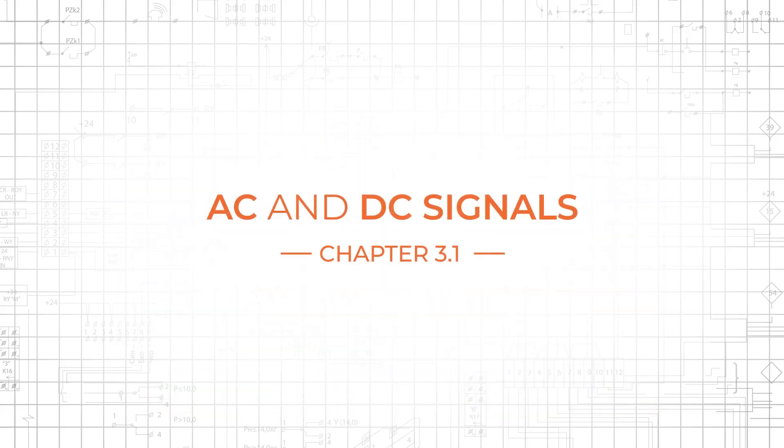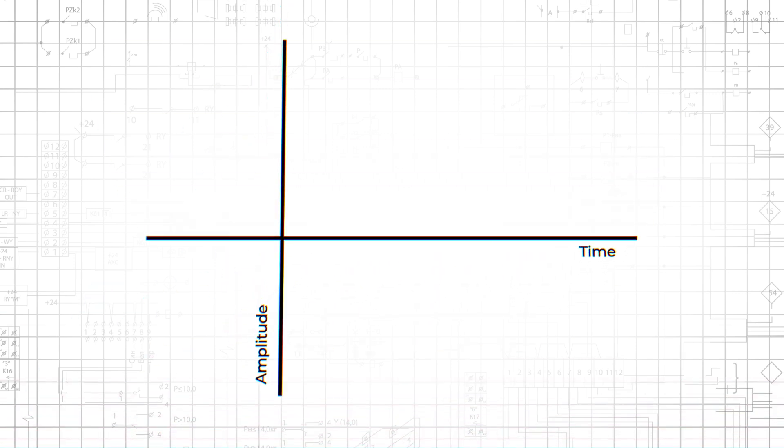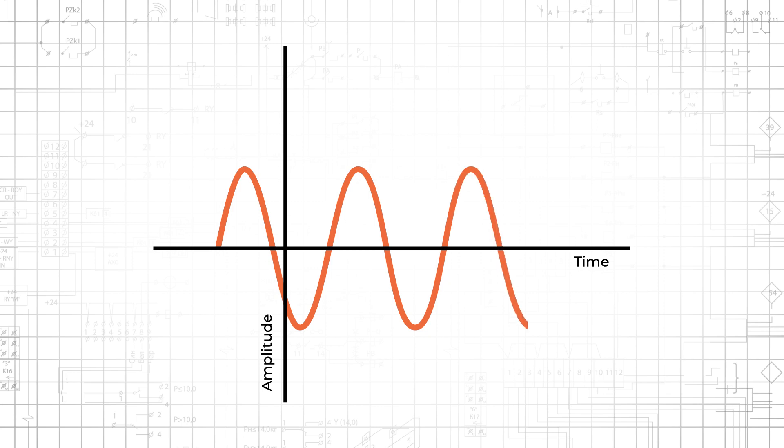Electrical engineers spend a lot of time talking about signals, which are in general a means of transferring or representing information. The characteristics of an electrical signal are determined by its relationship between amplitude and time.